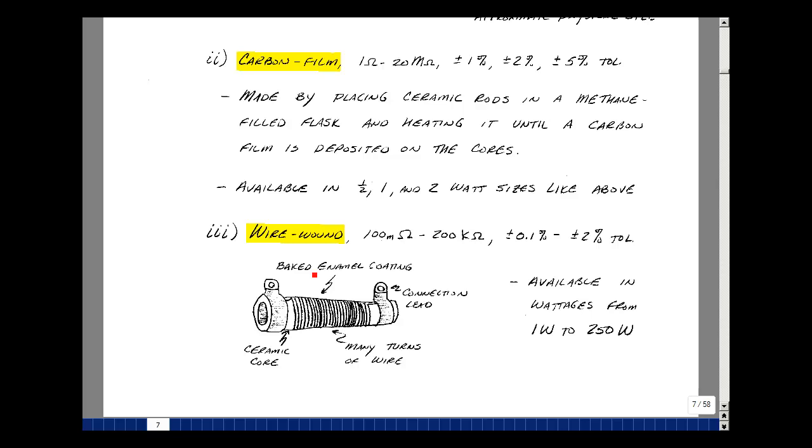And the third resistance is called a wire-wound resistor, and these are typically available from 100 milliohms to about 200k. Tolerances of 0.1% to 2%. These are made by wrapping wire around a ceramic core and then baking and enamel coating over it. You can achieve some pretty high wattages with these, from 1 watt to maybe 250 watts.